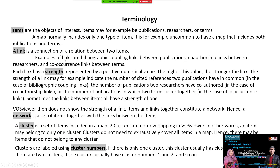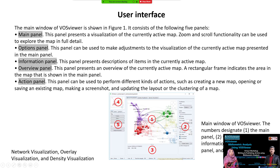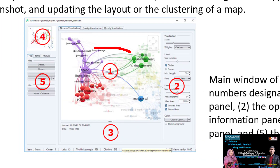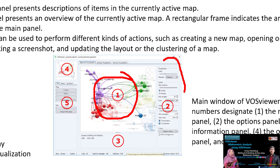Now let us look at the user interface of the VOSviewer program. Everyone should have VOSviewer downloaded; if not, download it from the website. There is a main map panel, an additional options panel, and an information panel. As you can see here, this is the main panel, and this is the options panel.